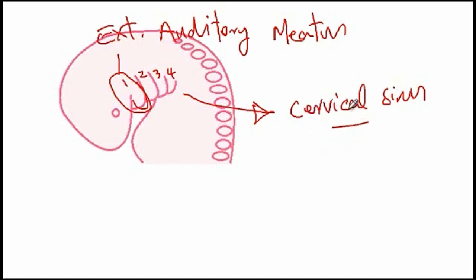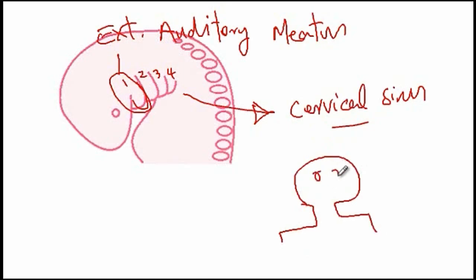If these cysts do not get obliterated, then it would manifest as a lateral neck mass. So if this is that individual and the cyst persists, it would be a lateral neck mass that is usually in front of the sternocleidomastoid. It could be on the left side or on the right side, but usually it only appears on one side. Similar to the thyroglossal duct cysts, these cysts are at increased risk of infection.